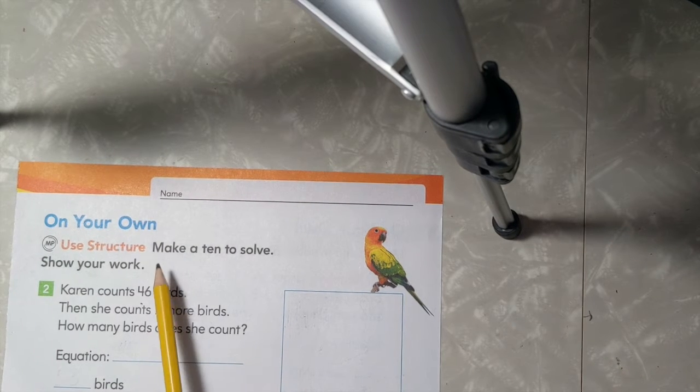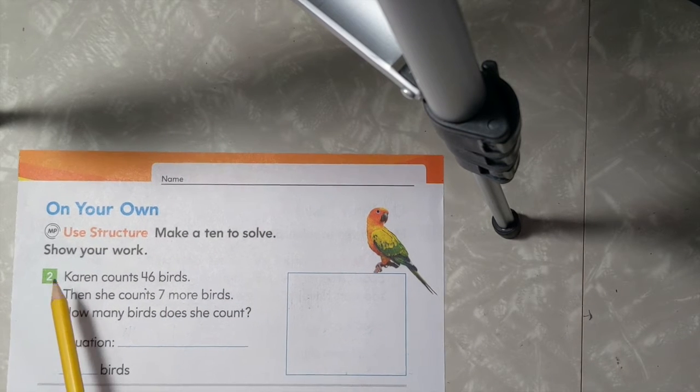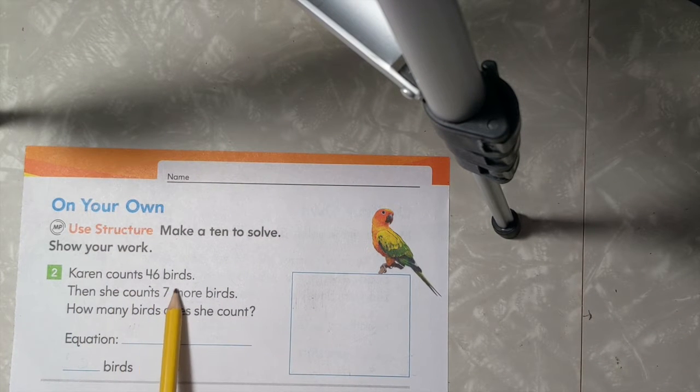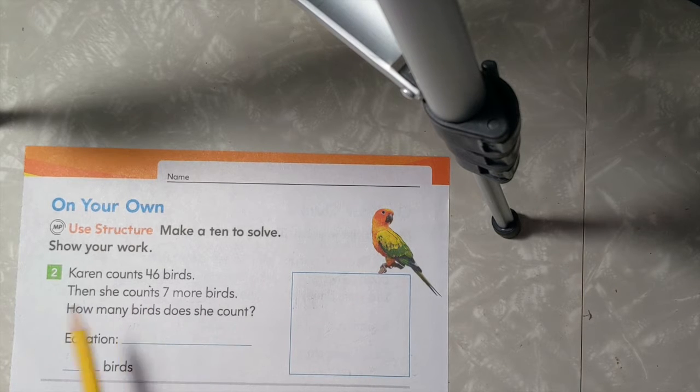For this first section, it says make a 10 to solve, show your work. Number 2, Karen counts 46 birds, then she counts 7 more birds. How many birds does she count?